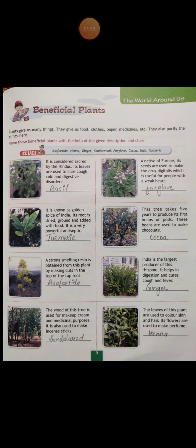The fourth one: this tree takes five years to produce its first beans or pods, and these beans are used to make chocolate. The plant name is cocoa.